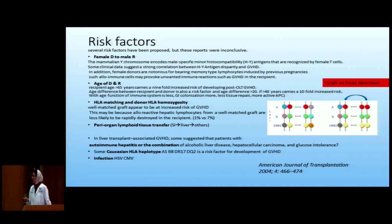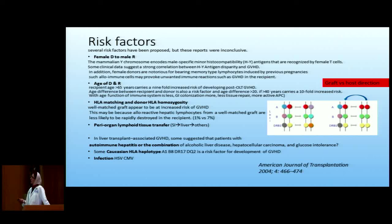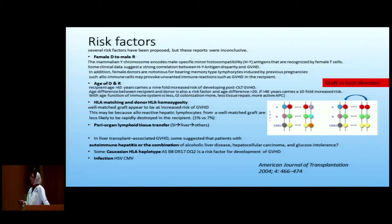Now, risk factors. Because of the small numbers, most risk factors are not well-studied — all depend on case reports and retrospective data. Starting with what's known from stem cell transplant: female donor to male recipient is a risk factor because the Y chromosome is considered a minor antigen mismatch — there's an HY antigen that female donor T cells recognize as foreign. Also, multiparous females will have lymphocytes already activated and ready to attack.